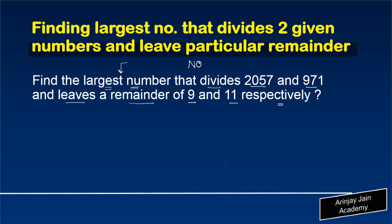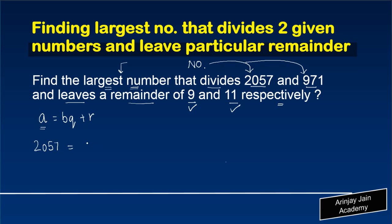We need to find the number which divides 2057 and leaves a remainder of 9, and which also divides 971 and leaves a remainder of 11. If you remember, we had a = bq + r. In this case, a is 2057, equal to bq + r, where the remainder is 9. Similarly for 971, we get 11 as the remainder.